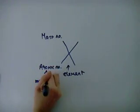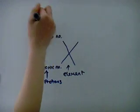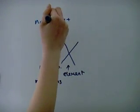The atomic number is the number of protons in the nucleus, and the mass number is the total number of protons and neutrons in the nucleus.